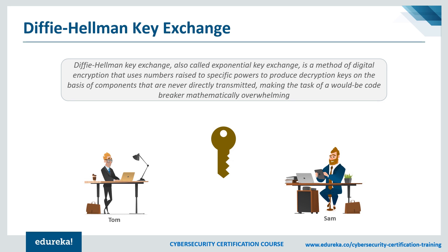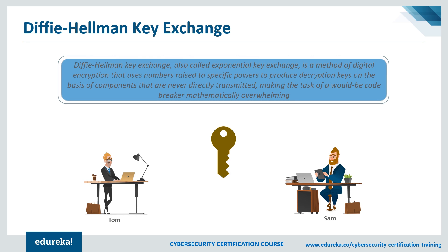Diffie Hellman key exchange, also called exponential key exchange, is a method of digital encryption that uses numbers raised to specific powers to produce decryption keys on the basis of components that are never directly transmitted, making the task of a would-be code breaker mathematically overwhelming. The Diffie Hellman key exchange method allows parties that have no prior knowledge of each other to jointly establish a shared secret key over an insecure channel. This key can be used to encrypt subsequent communications using a symmetric key cipher.